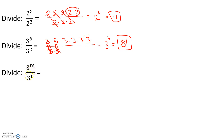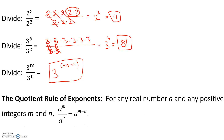This brings us to the quotient property of exponents. The quotient property says: for any real number a and any positive integers m and n, a to the m divided by a to the n equals a to the m minus n. In other words, when dividing the same base, keep the base and subtract the exponents.